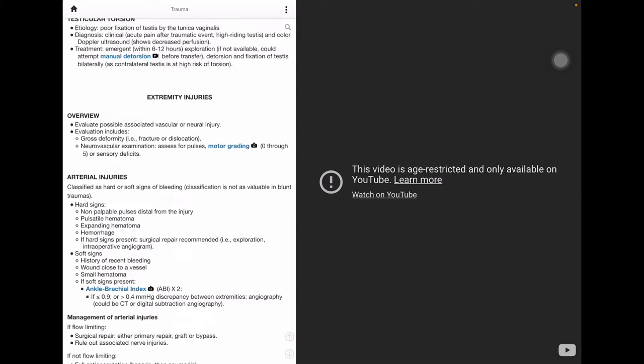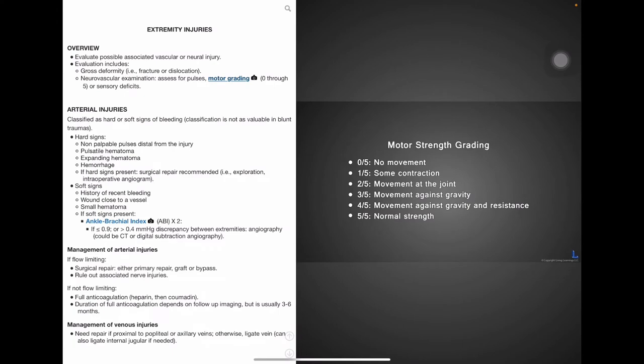So now we have extremity injuries and these are classified as either hard or soft signs of bleeding but this classification is not as valuable in blunt traumas. For management of arterial injuries, specifically management of flow limiting arterial injuries, we use surgical repair such as a repair graft or a bypass and we could also rule out associated nerve injuries. Now management of arterial injuries that are not flow limiting include full anticoagulation of heparin and Coumadin. The duration of full anticoagulation depends on follow-up imaging but it is usually three to six months. For management of venous injuries, if proximal to the popliteal or axillary veins, then the venous injury needs repair. If not, then the vein can be ligated in addition to the internal jugular if necessary.